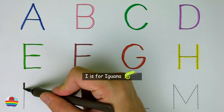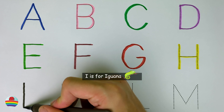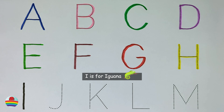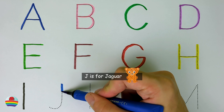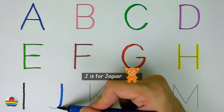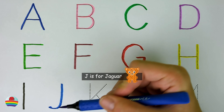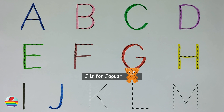I. I is for iguana. I. J. J is for jaguar. J.